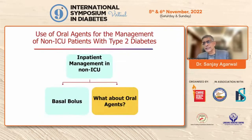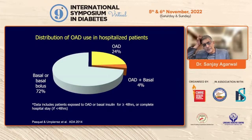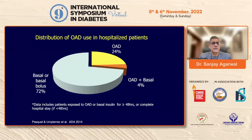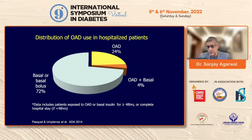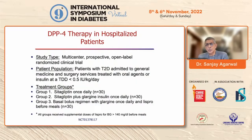When considering oral agents: can they be used in hospitalized patients? A random analysis of hospital prescriptions showed that 72% of hospitalized patients were on basal-bolus, 4% on oral plus basal, and 24% were managed on oral agents alone. This raised the question of whether all patients require insulin or whether oral agents offer an advantage.